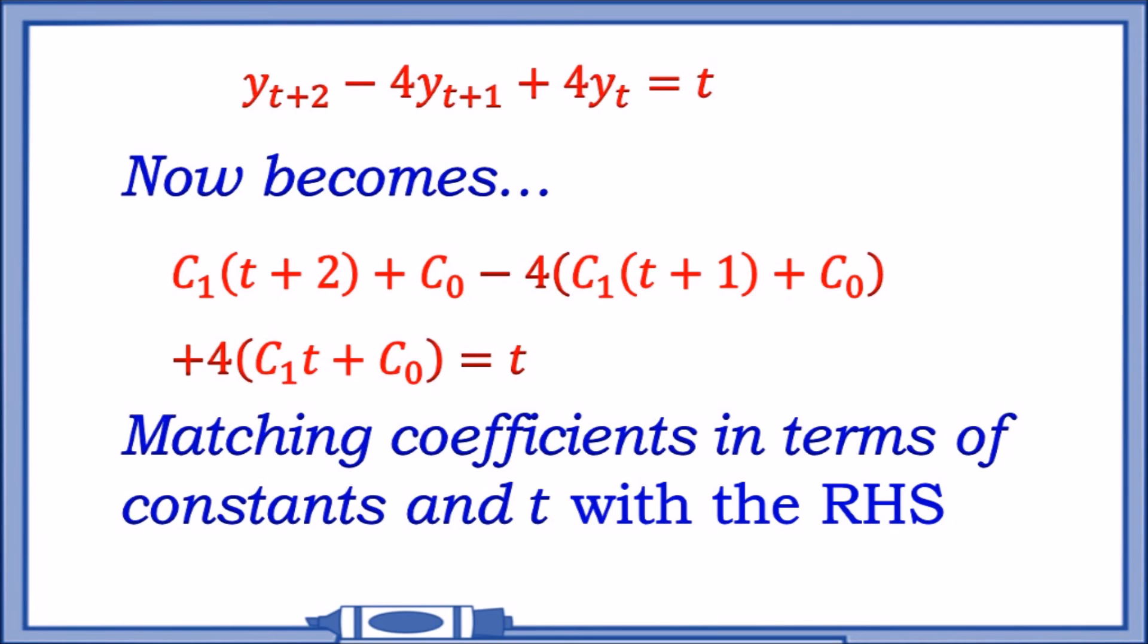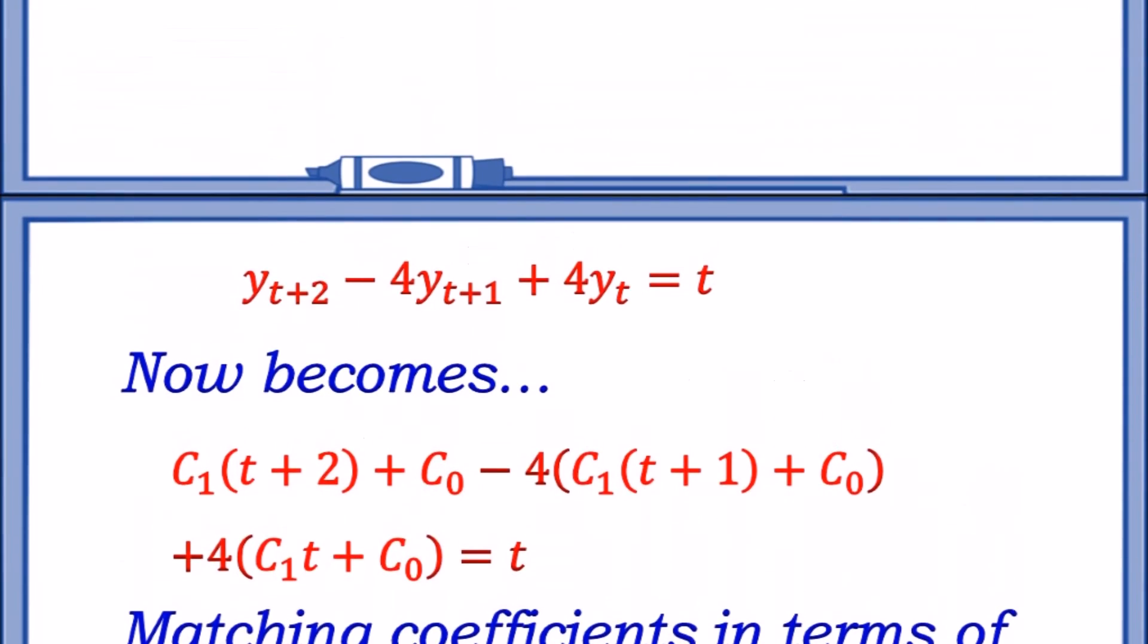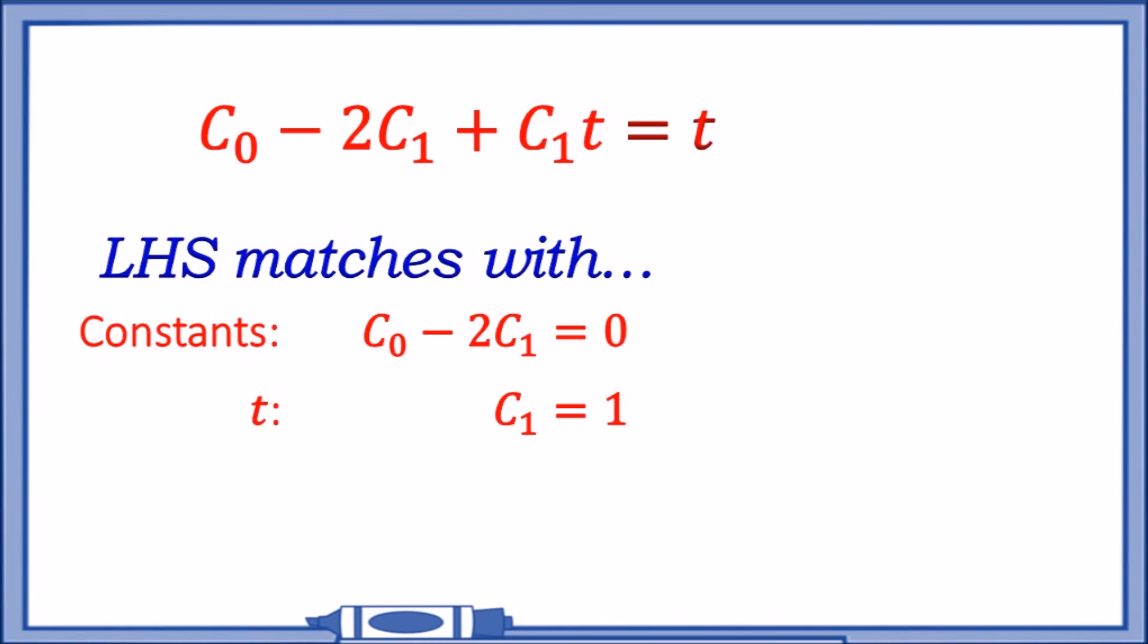We get C₀ - 2C₁ + C₁t = t. Now you can see that the left-hand side matches with what exactly? The coefficient, the constants in this case, would be C₀ - 2C₁, and on the right-hand side there's obviously no constant, so that equals 0. In terms of order t, there's only C₁ attached to it, and on the right side think of t as 1 times t.